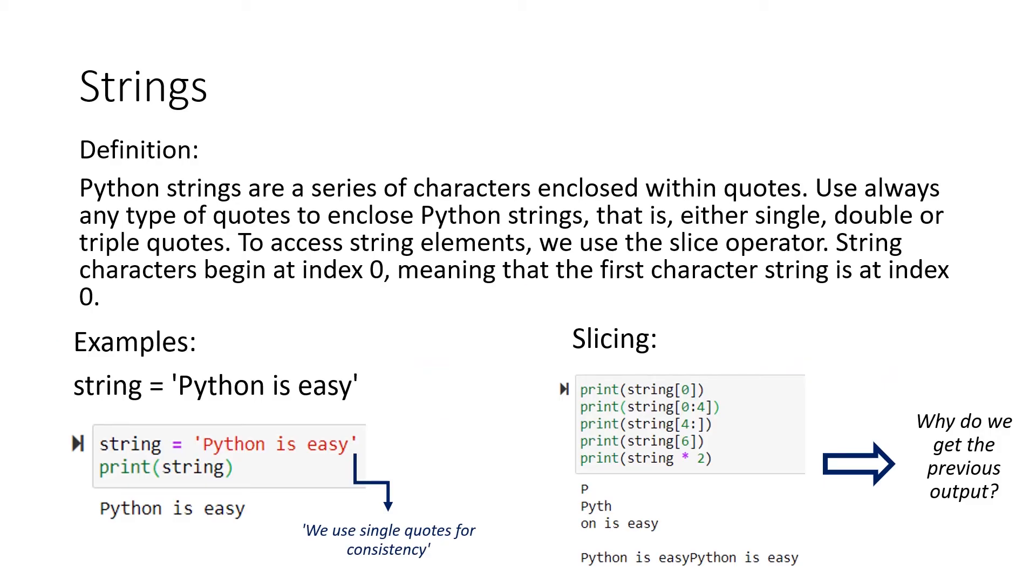Strings, on the other side, is seen more as the text version of a data type. You have numerical values, numbers, and then you have some kind of text, or in Python it is called string. Python strings are a series of characters enclosed within quotes. Use always any type of quotes to enclose Python strings, that is, either single, double, or triple quotes. To access string elements, we use the slice operator. String characters begin at index 0, meaning that the first character is at index 0.